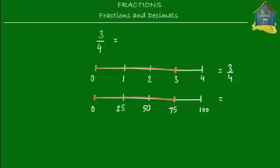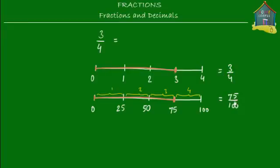Now let's see what fraction this colored part represents. The colored part is still 3 parts out of the 4 parts the number line is made up of. So the fraction three quarters is now represented by the fraction 75 out of 100, because the colored part goes from 0 to 75 out of a total of 100. The fraction three quarters has been changed to 75 upon 100, and these two fractions are equal. We changed it to a denominator of 100 because we want to convert three quarters to a decimal fraction.